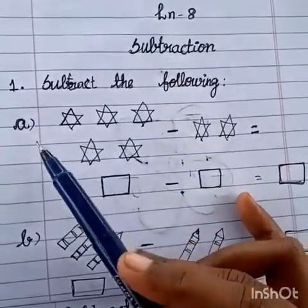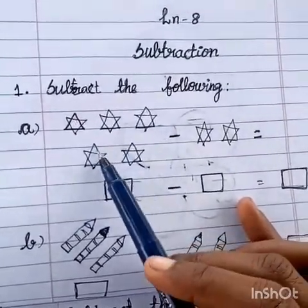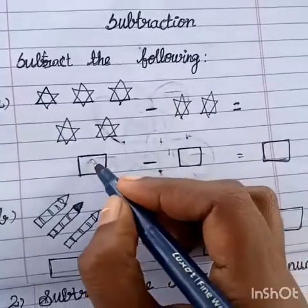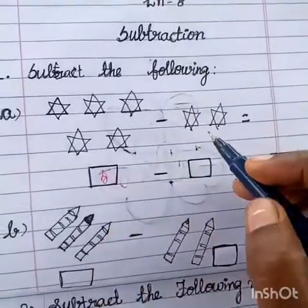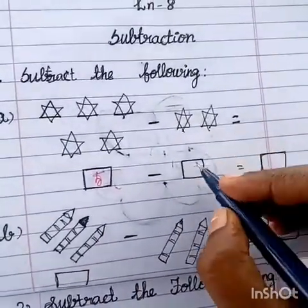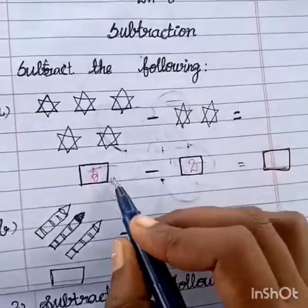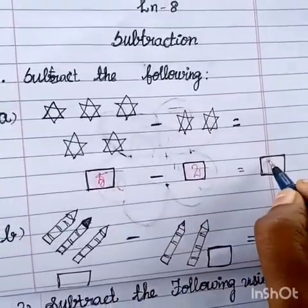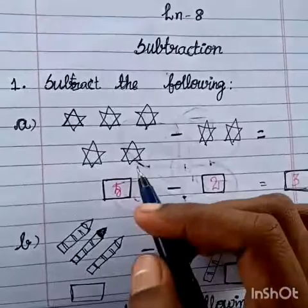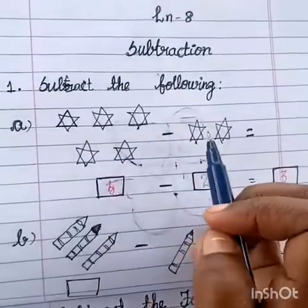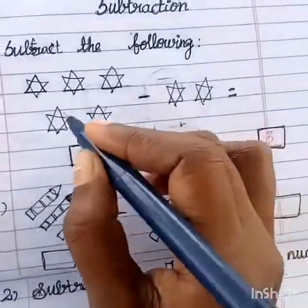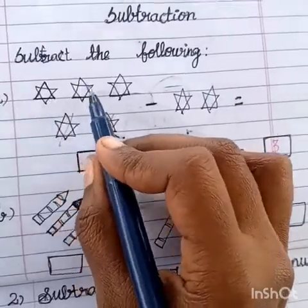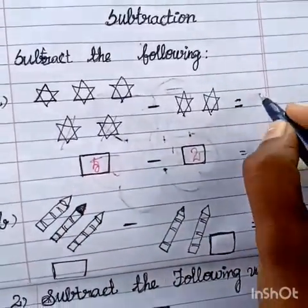It is picture counting now. First, A question is 1, 2, 3, 4, 5. So in box, what is 5? Then here is 1, 2. So 5 minus 2 is equal to 3. If you count here, here is 5. So here is 1, 2. So here is 1, 2, 3. So the answer is 3.